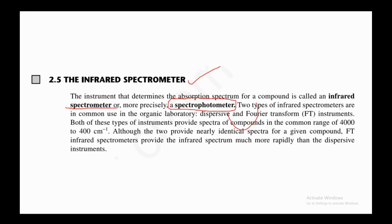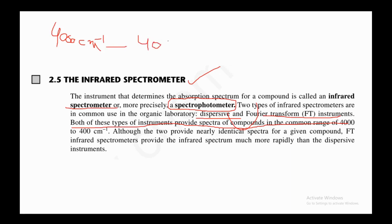Two types of infrared spectrometers are in common use in the organic laboratory: dispersive and Fourier transform. Both types of instruments provide spectra of compounds in the common range from 4000 per centimeter to 400 per centimeter — that is the range of an IR spectrum that you commonly see.